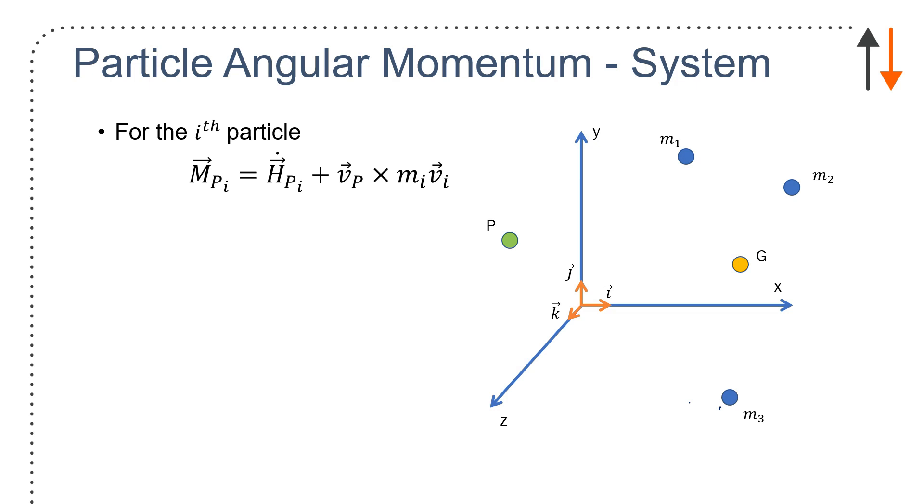So m_i v_i, for example, is m1 v1, m2 v2, whatever it is. I can define the distances r1 and r_g. And I can define the distance to the center of mass, r_g. Finally, I have the distance to the point p, which is r_p.